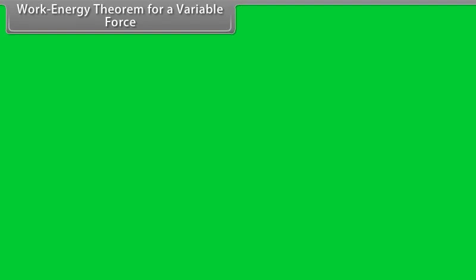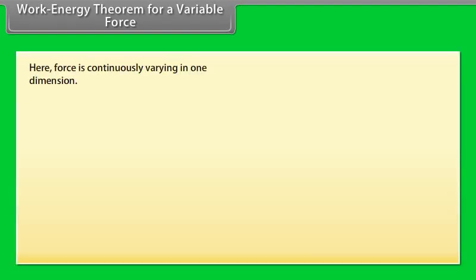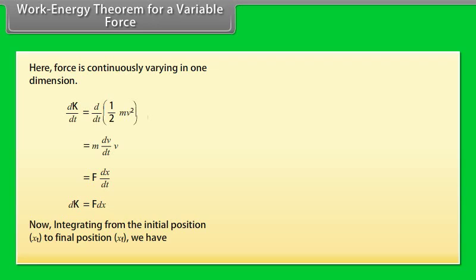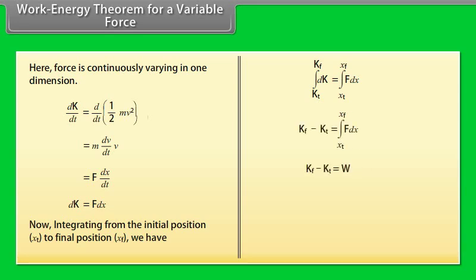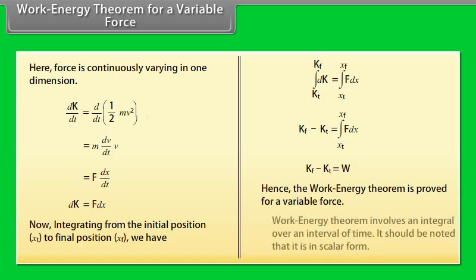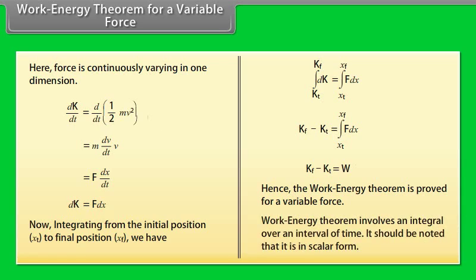Work energy theorem for a variable force. Here force is continuously varying in one dimension. By calculating dK/dt = d/dt(½mv²), we get dK/dt = f × dx/dt, which gives dK = f dx. Now integrating from the initial position xi to final position xf, we have Kf - Ki equals to work. Hence, the work energy theorem is proved for a variable force. Work energy theorem involves an integral over an interval of time. It should be noted that it is in scalar form.